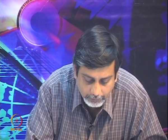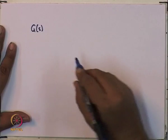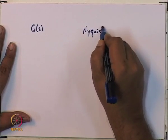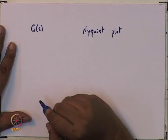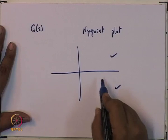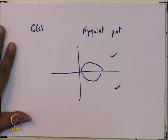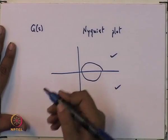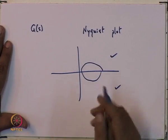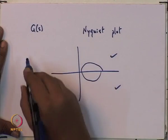Let me start by revisiting what the definition of positive realness is. Given a transfer function G, one definition for positive realness is: you look at the Nyquist plot, and if the Nyquist plot lies in the first and the fourth quadrant, then that transfer function can be called positive real. So if the Nyquist plot is in the first and the fourth quadrant, then you call it positive real.